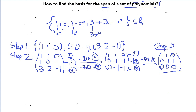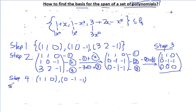Step 4: identify the leading entries — they are 1 and minus 1. So the rows with leading entries are [1, 1, 0] and [0, -1, -1]. Step 5: convert these back to their polynomials. The first row gives us 1 plus x, and the second row — with no constant term, minus 1 for x, and minus 1 for x squared — gives us minus x minus x squared.